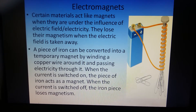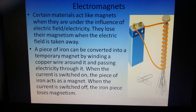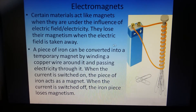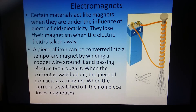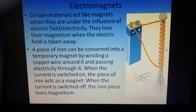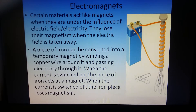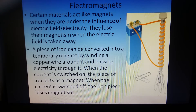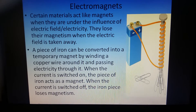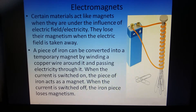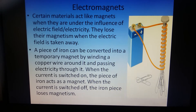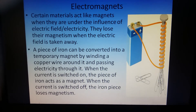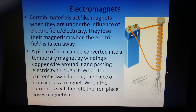We also saw electromagnets. Electromagnets are a type of temporary magnet — materials which start acting like a magnet under the influence of electricity. If a copper wire is wrapped around an iron nail and electricity is passed through it, the nail will start acting as a magnet and is called an electromagnet. If the electricity is removed, the nail will stop acting as a magnet and lose its magnetism.